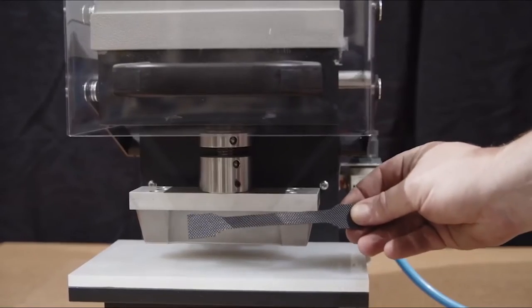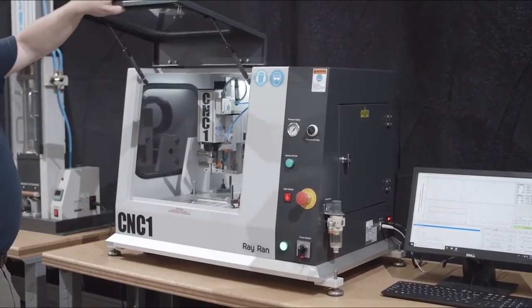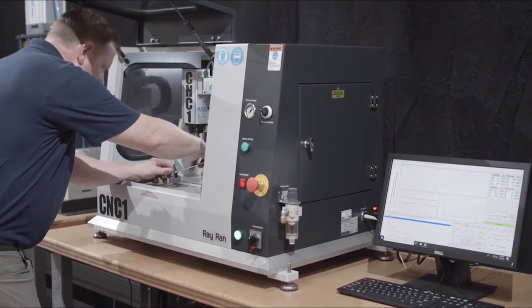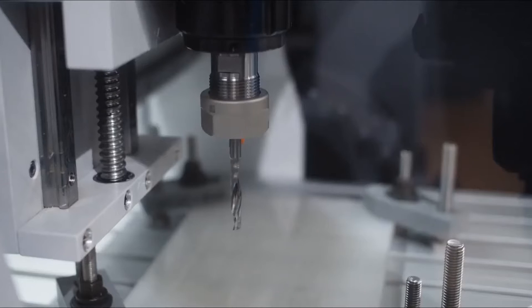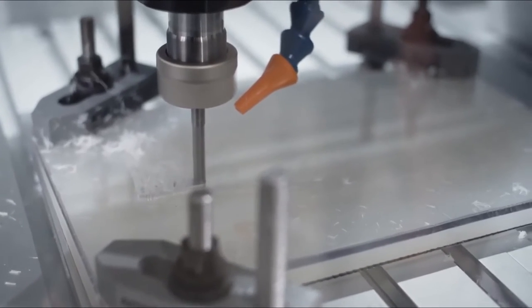Also on display at our demonstration lab is the more advanced CNC1 and CNC2 sample profile cutting machines. The 3-axis rapid-prototyping CNC1 vertical milling machine is ideal for cutting hard, dense polymer sheets and laminates up to 40 millimeters thick.